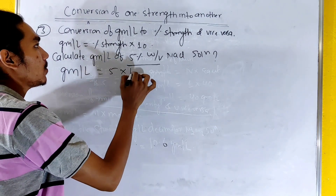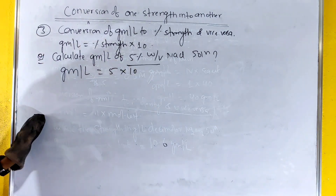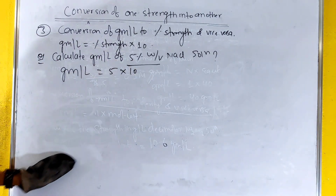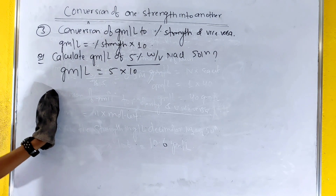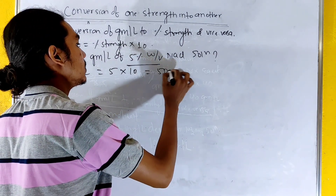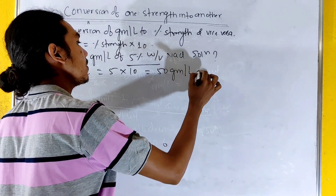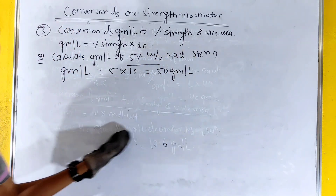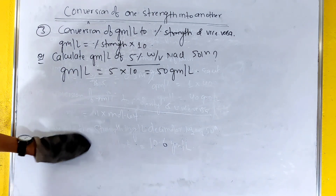Gram per liter equals 5 into 10, so gram per liter is 50 gram per liter.